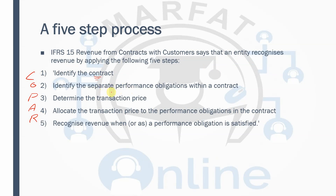The second step is identifying separate performance obligations within a contract. This is a concept usually tested in final account adjustments or objective test questions. For example, if I buy a car from Toyota, they will give me the car, plus a three-year service with one annual service each year, and a warranty for specific parts. That means within one contract there are three performance obligations: the car, the three-year service, and the warranty.